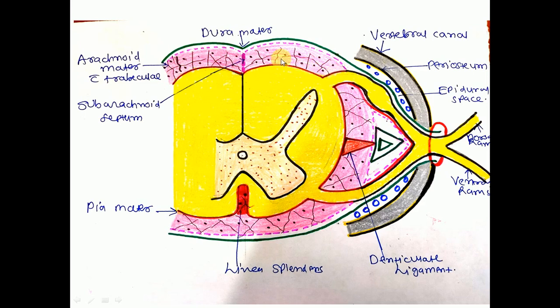Note that the meaning of 'mater' is mother or protective covering. Another name for the dura mater is pachymeninges. The dura mater of the cranial meninges, that is the dura mater within the skull bone, has already been discussed along with the head and neck topic.